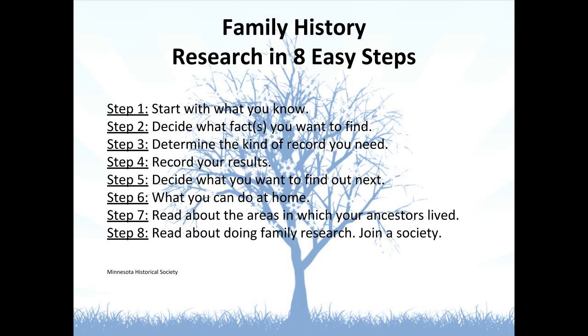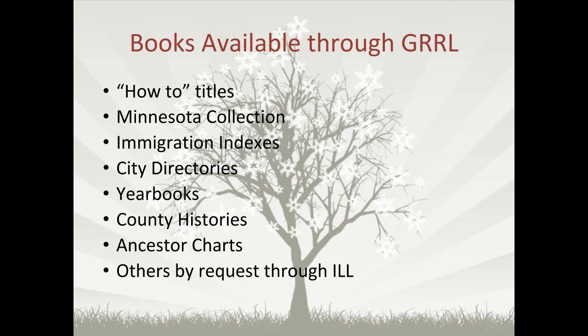Let's take a look at some interesting resources available through the library. Books — could we talk about library resources without mentioning books? There are great books available, including how-to books to guide you through your research and some that specialize in ethnicities or DNA testing. A few great ones are Evidence Explained by Elizabeth Shown Mills, The Unofficial Guide to Ancestry.com by Nancy Hendrickson, and Organize Your Genealogy by Drew Smith. If you're getting into DNA testing, The Family Tree Guide to DNA Testing and Genetic Genealogy by Blaine Bettinger is a must-read.